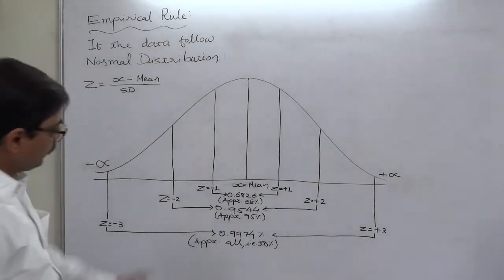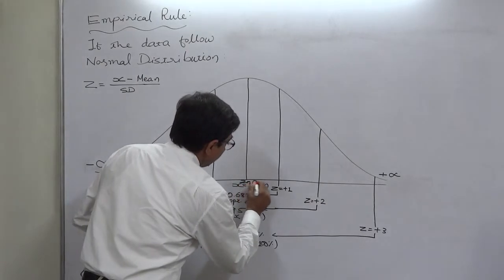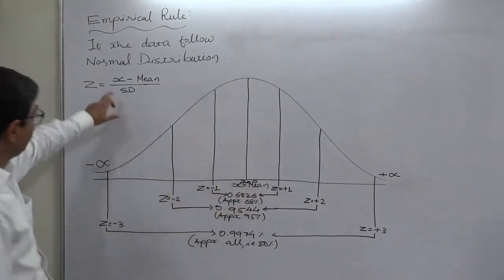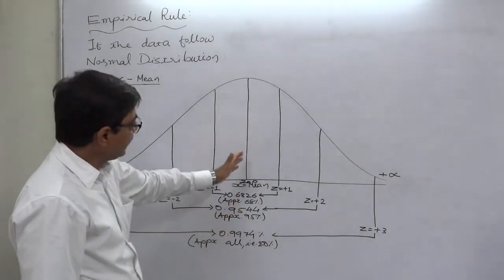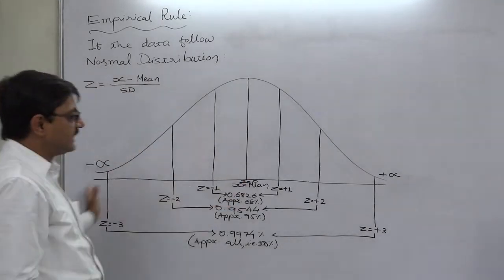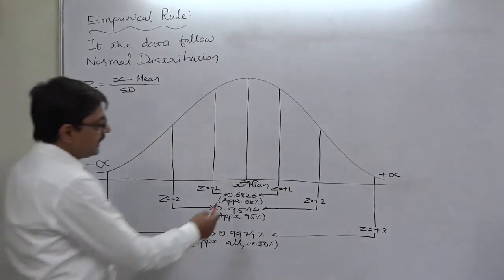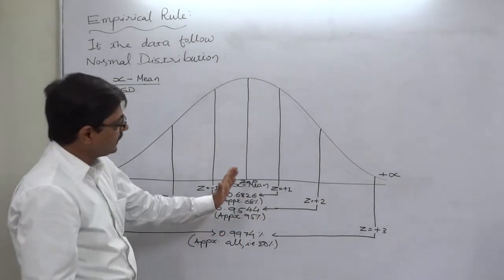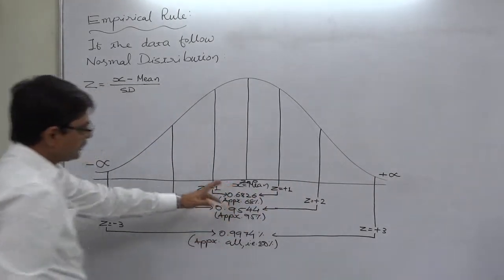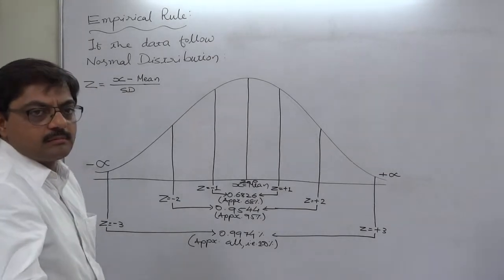In case of normal distribution, when the data value X is exactly equal to the mean, the value of Z equals 0 — that is exactly at the center. The entire normal curve is divided into two parts: data values less than the mean have a probability of 50%, so the area on the left-hand side is 0.5, and similarly the area on the right-hand side is also 0.5.